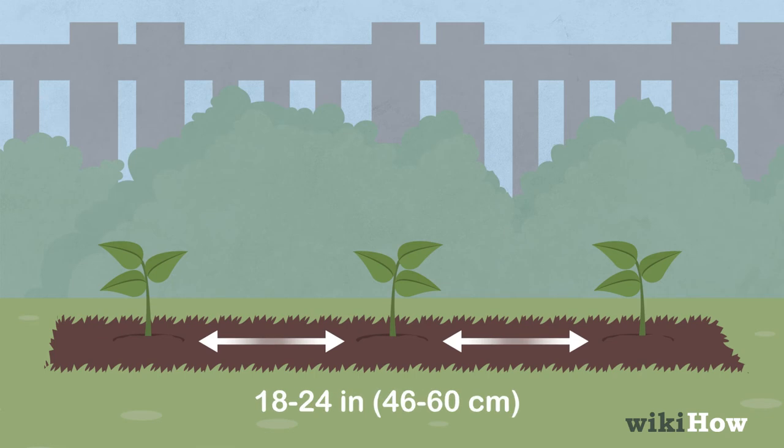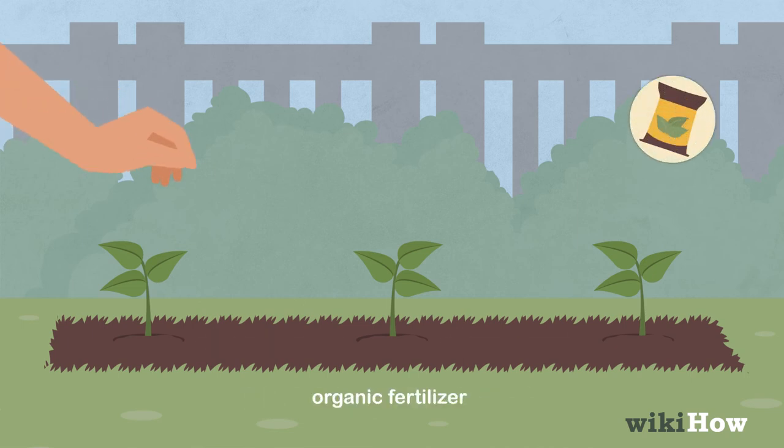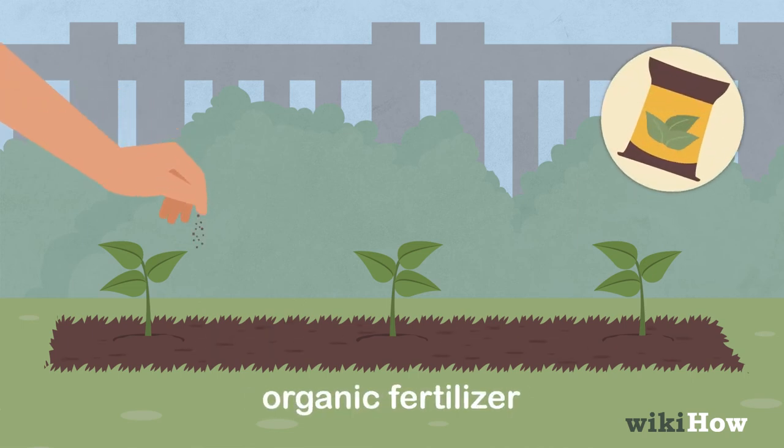Space your plants about 18-24 inches, 46-60 centimeters, apart. Add a pinch of organic fertilizer to the soil around each plant.